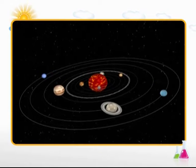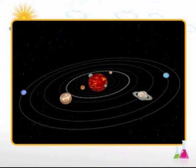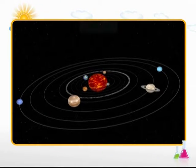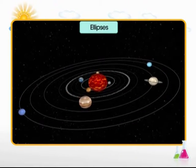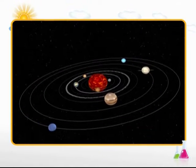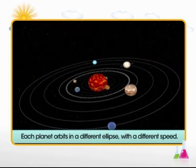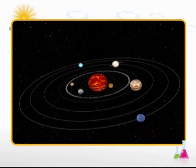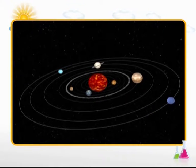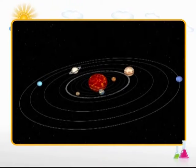The eight planets of the solar system each orbit the sun in paths which are called the ellipses. These ellipses are not quite circular. Each planet orbits in a different ellipse and at a different speed. This means that the positions of the planets relative to one another are constantly changing.